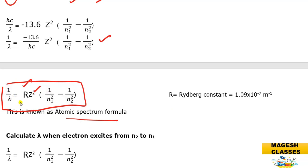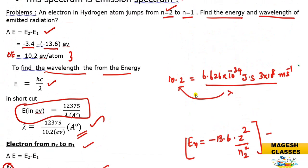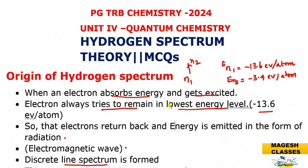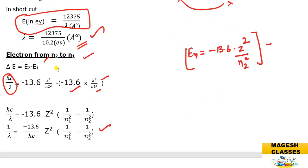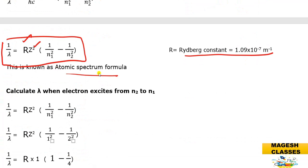The Rydberg constant R has the value 1.09 × 10⁷ m⁻¹. Some important formulas to recall: the energy formula, the shortcut to calculate electron energy in electron volts, wavelength in angstroms, and the atomic spectrum formula 1/λ = R(1/n₁² − 1/n₂²) are used to calculate lambda for various series.